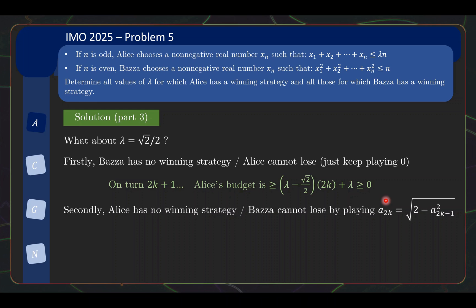And on the other hand, Alice has no win strategy or in other words, Bazaar cannot lose by just forever playing x2k equals to square root of 2 minus what Alice just played squared. And this is basically an argument you have seen before also. On turn 2k plus 1, Alice's budget is bounded above by square root 2. So Bazaar always has budget on his turn to play this exact strategy. Well, so neither of them will have a winning strategy when lambda equals square root 2 over 2.